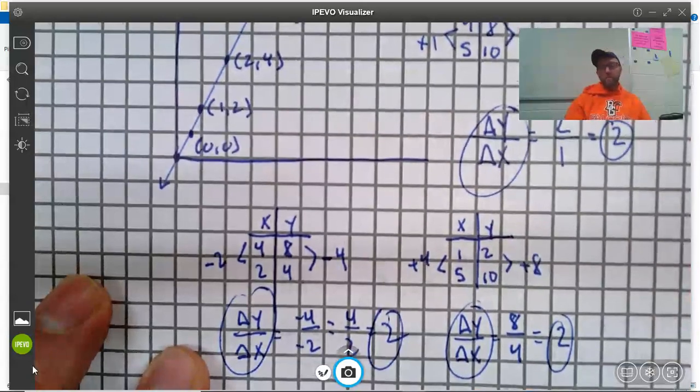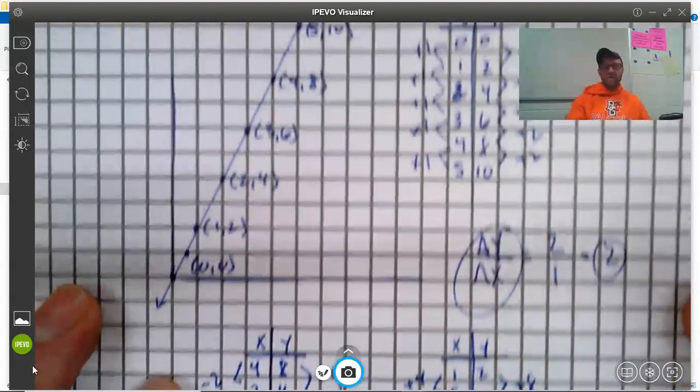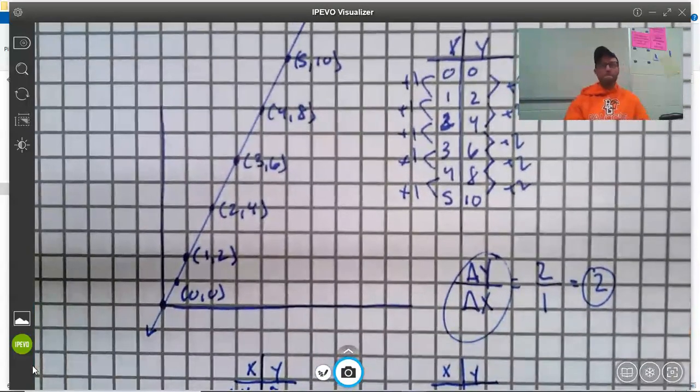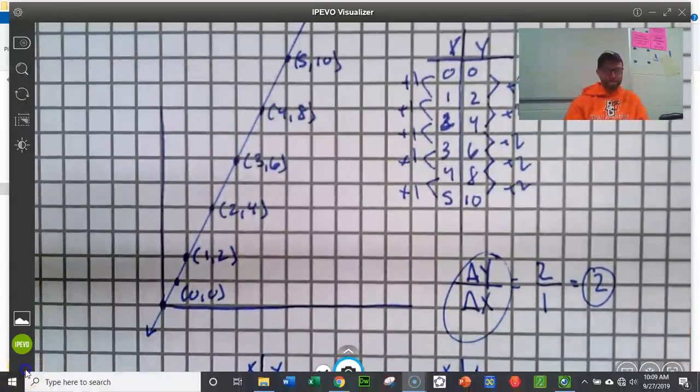And that is slope derived from delta y and delta x. Change in y, change in x. Alright. Good. All right.